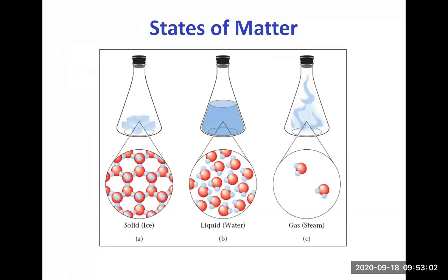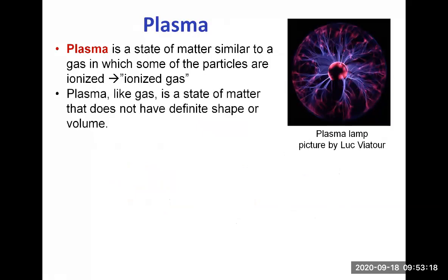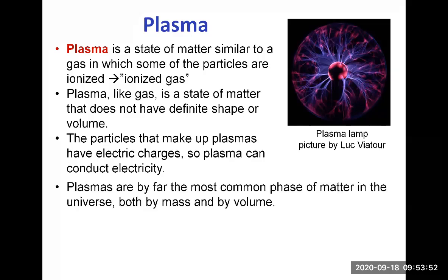Besides those three main states, there is also the plasma. Plasma is a state of matter similar to a gas in which some of the particles are ionized. So you can visualize it as an ionized gas. Plasma, like a gas, is a state of matter that does not have a definite shape or volume. The gas flows. You can compress it, expand it. The particles that make a plasma have electrical charges because they are ionized. And so plasma can conduct electricity because it's conducted whenever you can move electric charges. Plasma are by far the most common phase of matter in the universe, both by mass and by volume.